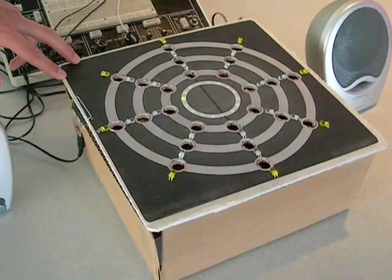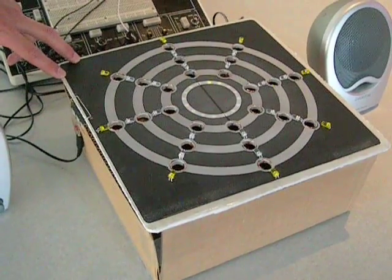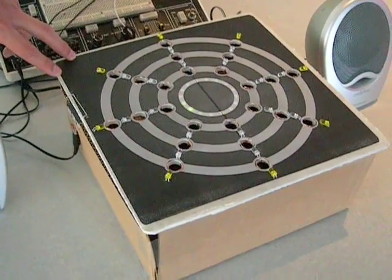Alright, this is the rhythm ring. It's a tangible interface that lets you arrange rhythms, so we call it an interactive rhythm sequencer.